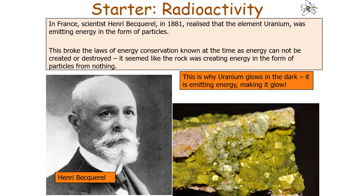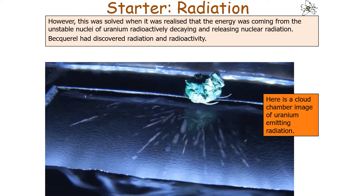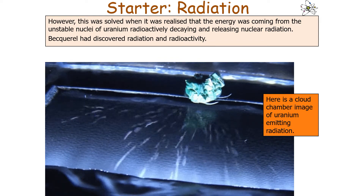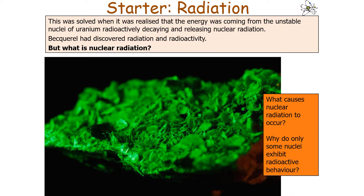In France, scientist Henri Becquerel in 1881 realised that uranium was emitting energy in the form of particles. This seemed to break the laws of energy conservation, since energy can't be created or destroyed. However, this was solved when it was realised the energy was coming from the unstable nuclei of the uranium itself, radioactively decaying and releasing nuclear radiation. This raised the question: what in fact is nuclear radiation, and why do only some nuclei exhibit radioactive behaviour?